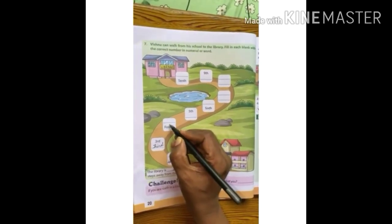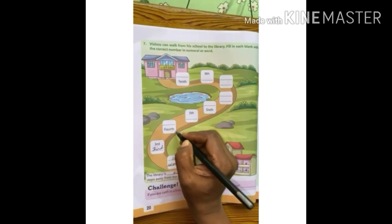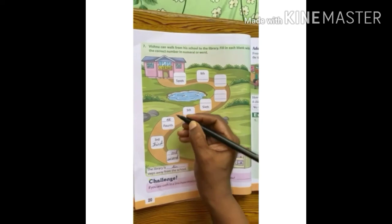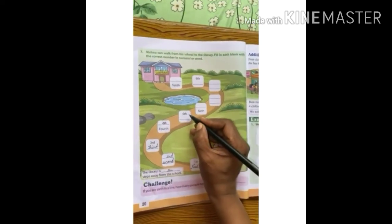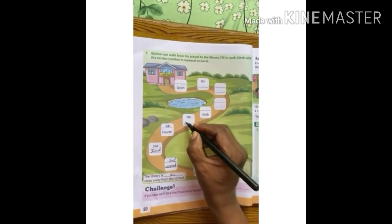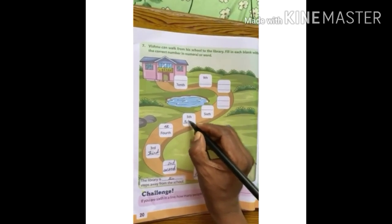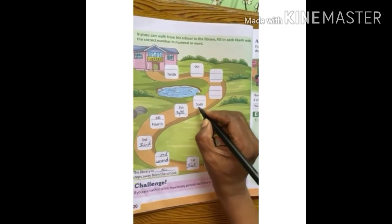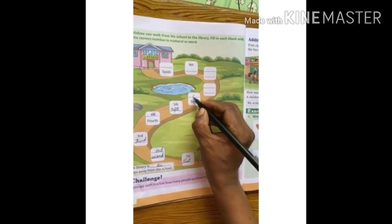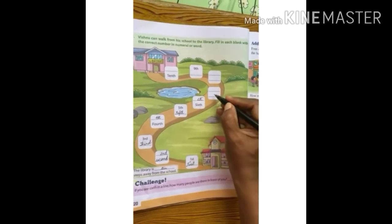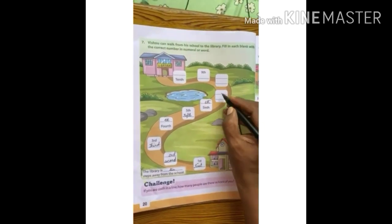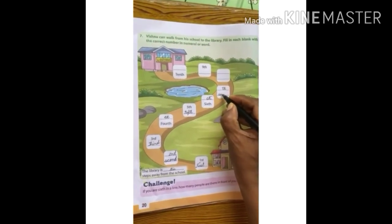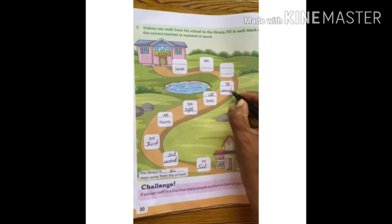Fourth position — it is written in word, we write the numeral. Fifth is written in numeral, we write in words: F-I-F-T-H. Sixth is written in words, we write the numeral. Seventh position — we write in numbers and in words: S-E-V-E-N-T-H.